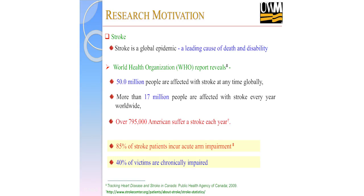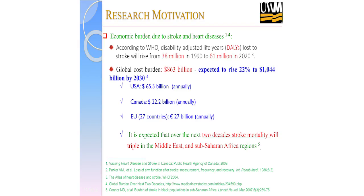Globally, 50 million people are affected with stroke at any time, and each year an additional 17 million people are affected. In America, over 800,000 Americans suffer a stroke each year. 85 percent of stroke patients incur arm impairment, and 40 percent of victims are chronically impaired. The global economic burden is $863 billion, and the USA burden is $65.5 billion annually.